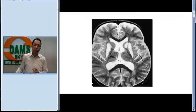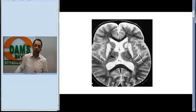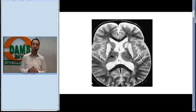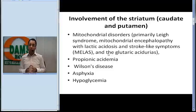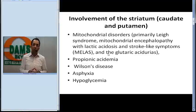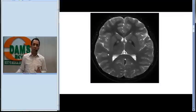We also look for deep gray matter involvement in gray matter disease. Looking at the first image, in this gray matter disorder you can see involvement of the striatum — specifically the caudate nucleus and the putamen. Whenever we see involvement of the striatum, we think of disorders like mitochondrial disorders such as Leigh's syndrome, MELAS, glutaric aciduria, propionic acidemia, Wilson's disease, asphyxia, and hypoglycemia.